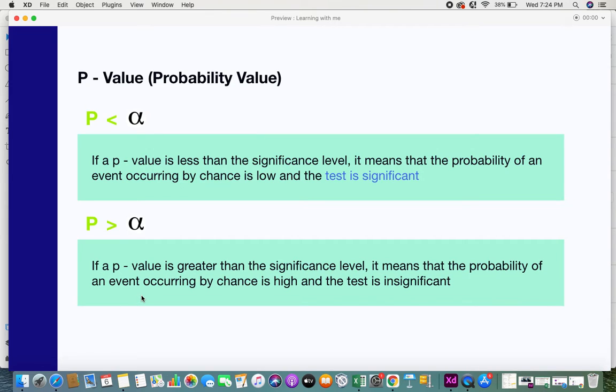But let's say the p-value is greater. The probability of things occurring by chance is greater. So you won't be able to trust that particular occurrence or that result. Because if things are going to happen by chance, then one time it may occur, another time it may not occur. You cannot take that particular information in order to take decisions. At that time the test is insignificant.